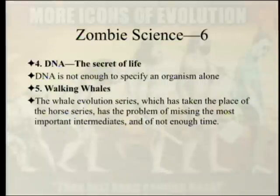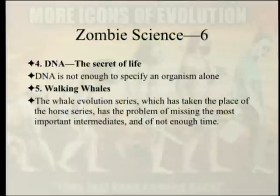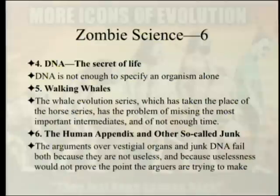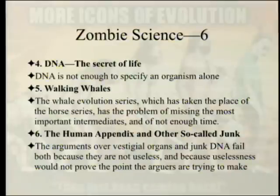DNA and epigenetics complicate efforts to evolve anything. Wells then discusses walking whales — the Whale Evolution Series, which has replaced the Horse Series — noting it's missing the most important intermediates: those going from water to air or air to water, and that there's not enough time. He also covers the human appendix and so-called junk DNA, arguing that arguments over vestigial organs fail both because they're not useless and because uselessness wouldn't prove the point anyway.